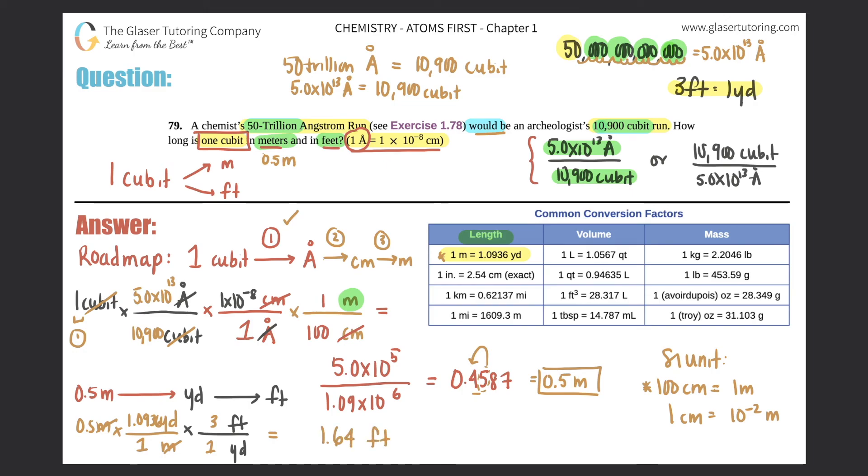But since there was technically one sig fig here, there should be one sig fig here. So the one, but the six will round that up to two. So this would be two feet. So how long is one cubit? One cubit is a half of a meter, 0.5 meters, and it's also two feet.